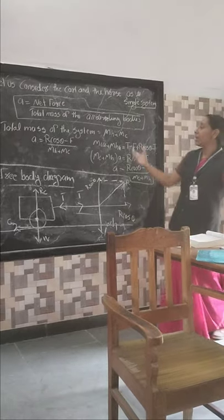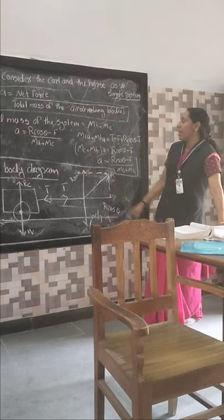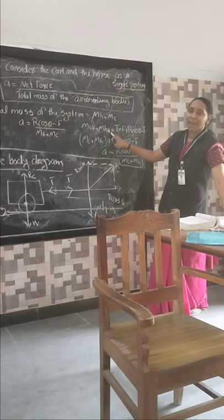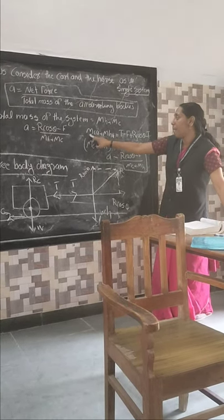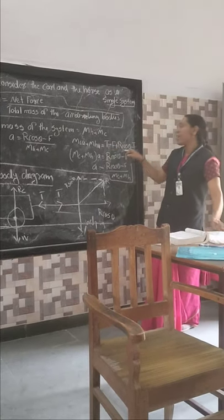And what is the total mass? Horse mass plus cart mass. So I get Ma, which means mass of cart times acceleration plus mass of horse times acceleration equals net force.